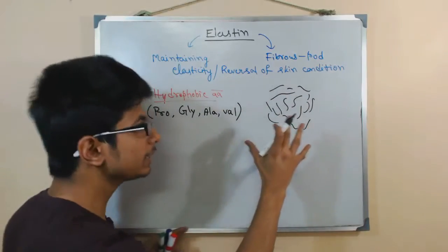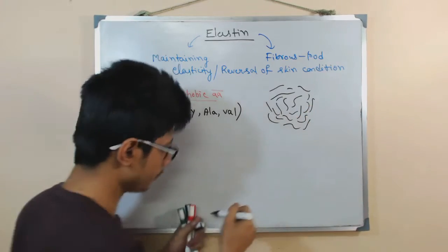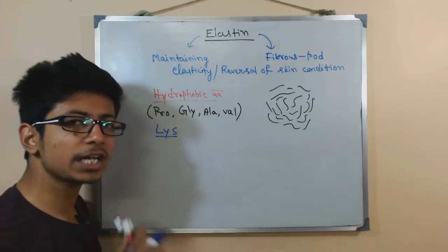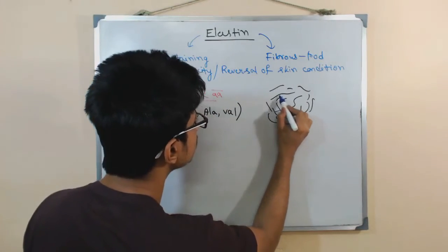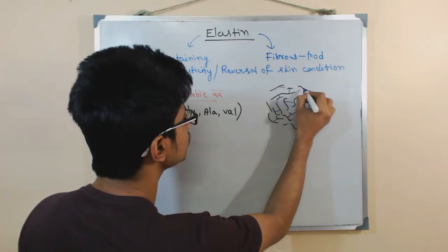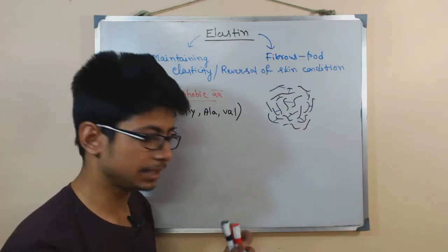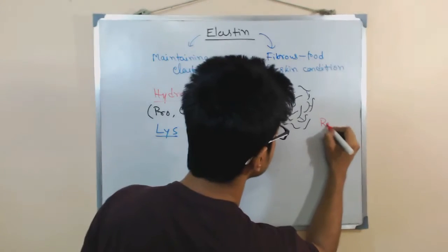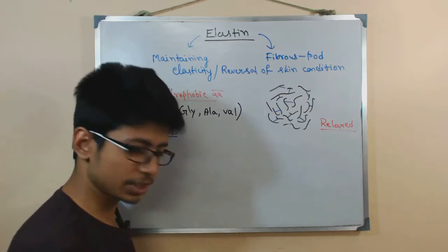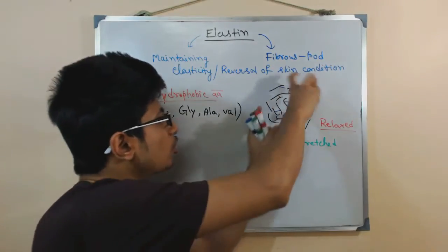Not only do they have hydrophobic amino acids, they also have some charged amino acids — for example, lysine. These lysine residues form connections with each other. As a result, this is the form of elastin present when you are in a relaxed state of the skin, muscle, or tissue.